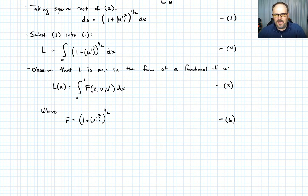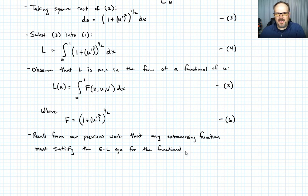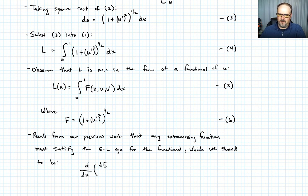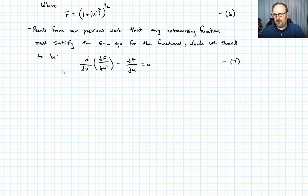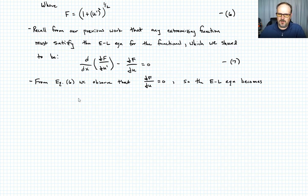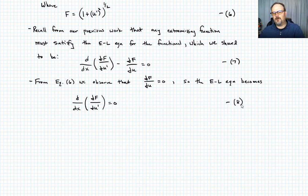From our previous work, any extremizing function u must satisfy the Euler-Lagrange equations. Those are: d/dx of (partial f / partial u prime) minus (partial f / partial u) equals zero — equation 7. Looking at equation 6, there is no explicit dependence on u, so partial f / partial u goes to zero, and the Euler-Lagrange equation becomes d/dx of (partial f / partial u prime) equals zero — equation 8.